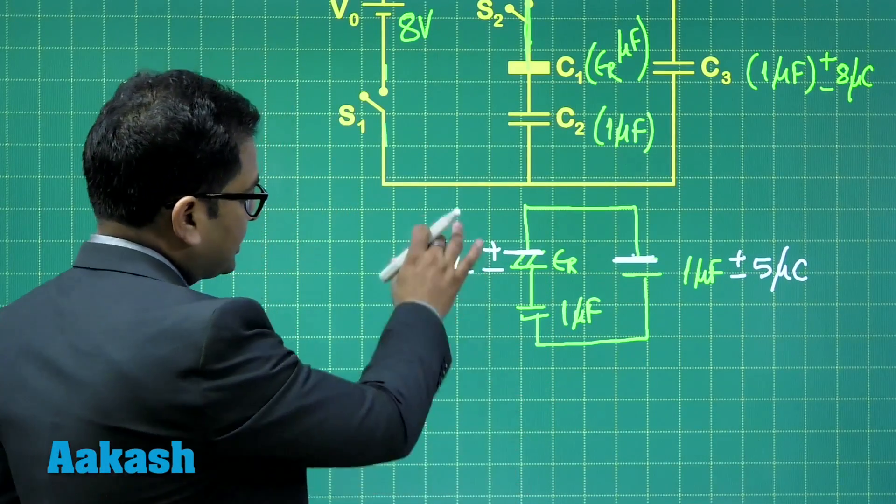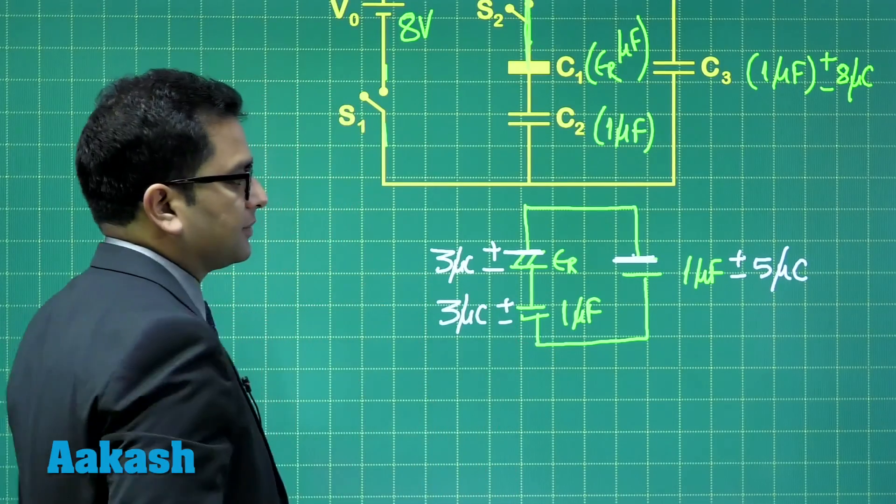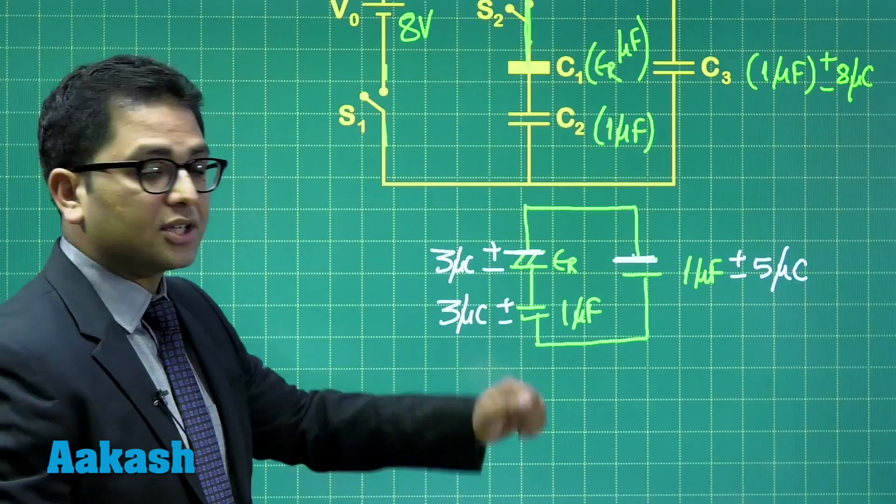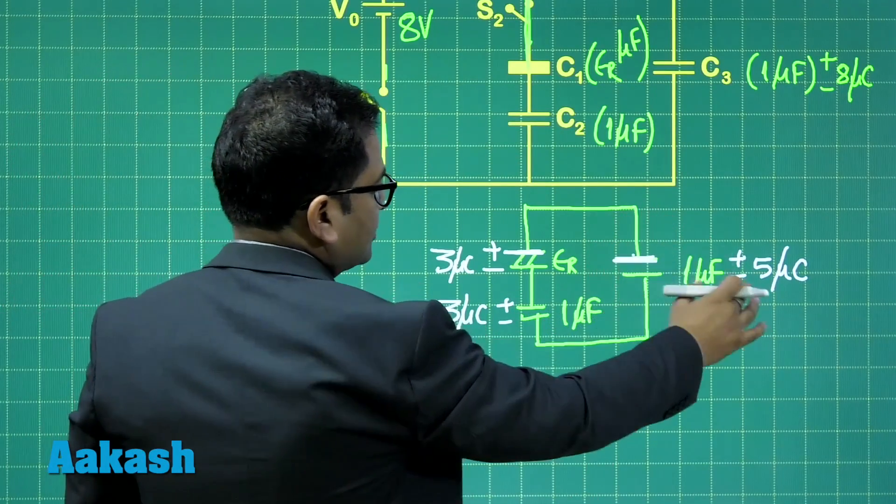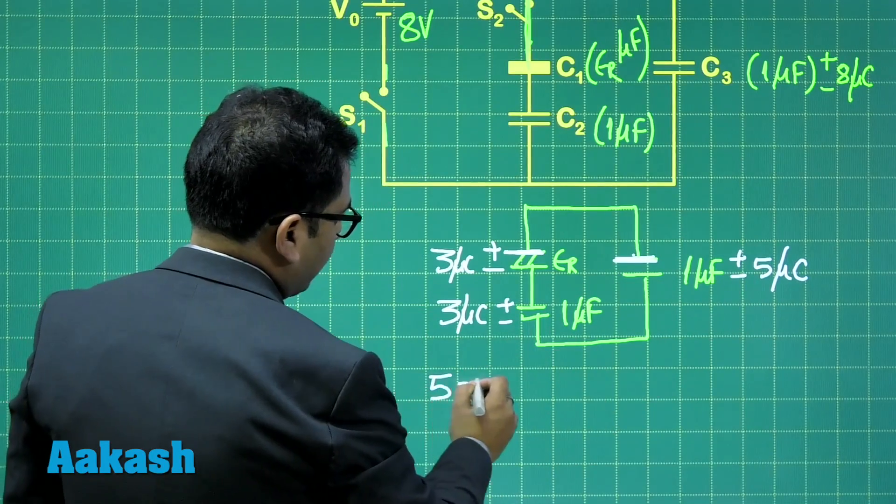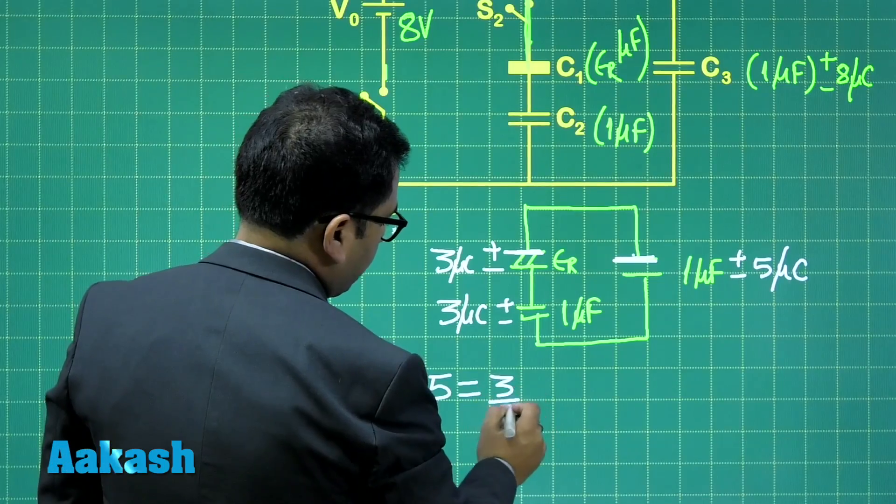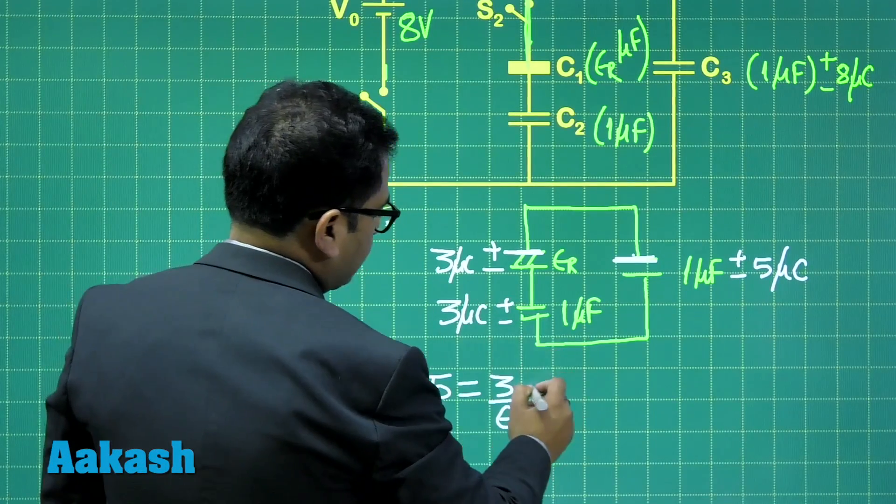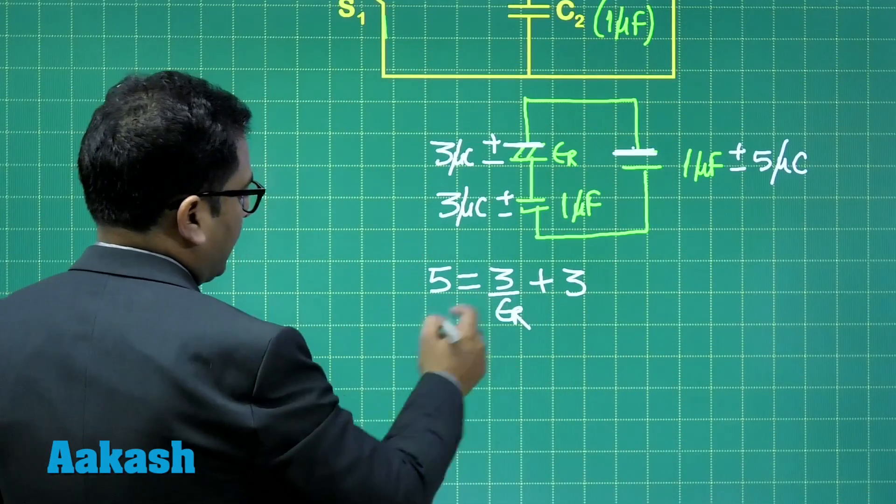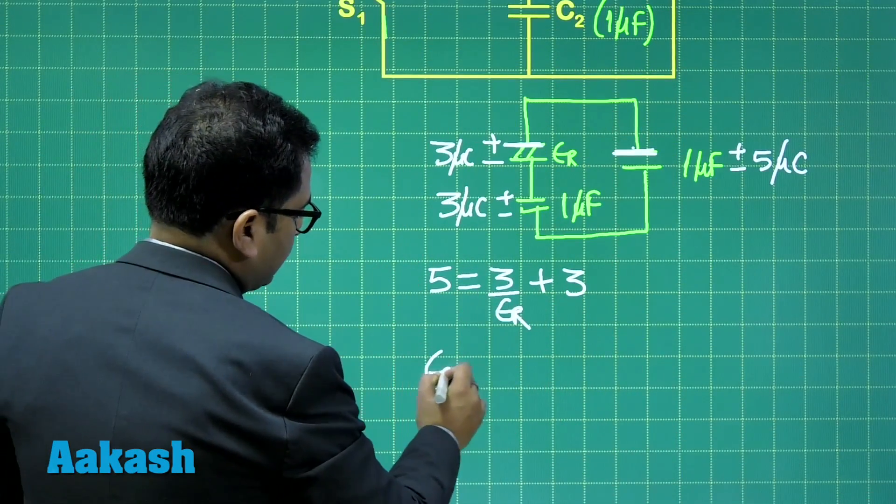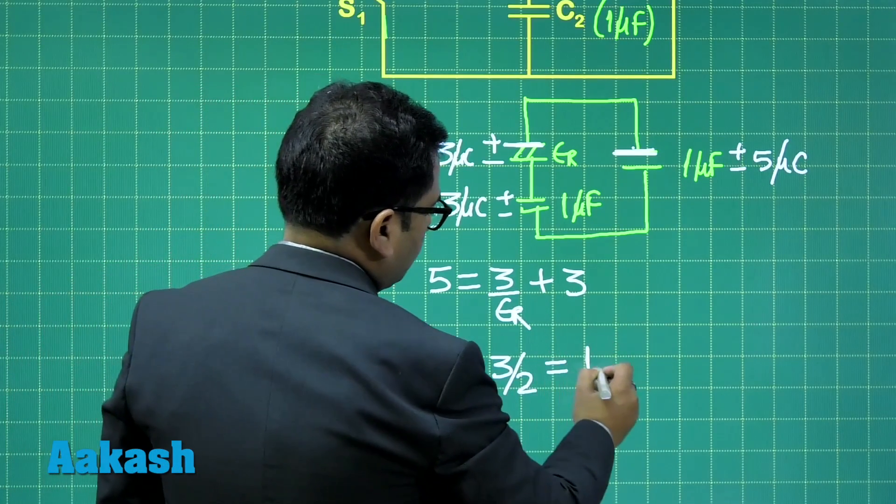And, if this is having 3 microcoulomb, this must be having 3 microcoulomb as well, because the same charge would be flowing. Now, you can just equate the potential difference. So, this is Q by C. That comes out to be 5. And this is Q by C. So, that's 3 by epsilon R. And this is plus of 3. So, that's a straightforward one. So, I'll be getting here, epsilon R equals to 3 by 2. And that value comes out to be 1.5.